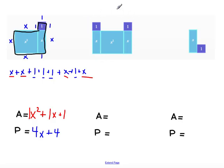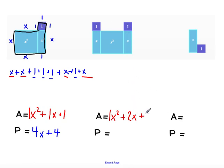Then looking at our second shape, we'll start with area. We can count up how many tiles: we have one x squared tile, we have 2 x tiles, and we have 2 unit tiles. So the area is x squared plus 2x plus 2.